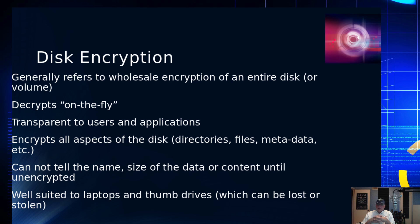Full disk encryption generally refers to the wholesale encryption of an entire disk or a volume. It decrypts on the fly as the files are pulled up and written back to disk — it encrypts and decrypts dynamically. It's transparent both to the user and to the application that's using it. It encrypts all aspects of the disk: the directories, the files, the metadata — so that you can't tell the name, size, or content of the file until it's unencrypted.